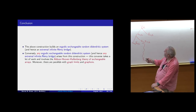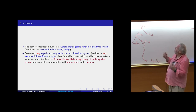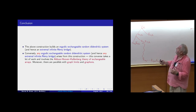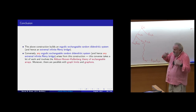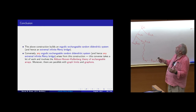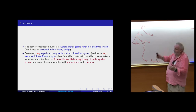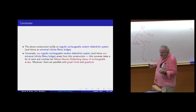The left-right indicators are produced randomly in an exchangeable way, in the spirit of the Aldous-Hoover-Kallenberg theory — using extra independent uniform randomness — and then the deterministic construction produces down-left and down-right. The conclusion is that this procedure builds an ergodic exchangeable random digendritic system, and hence an extremal infinite Rémy bridge.